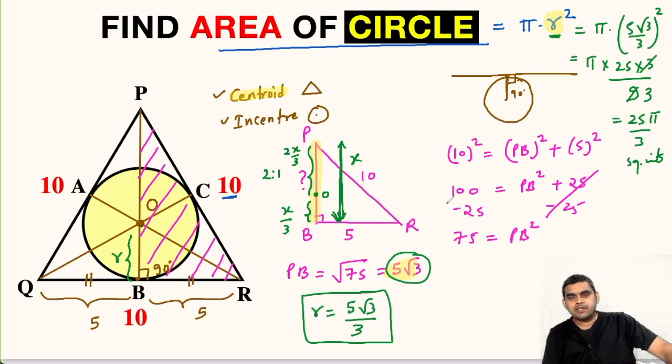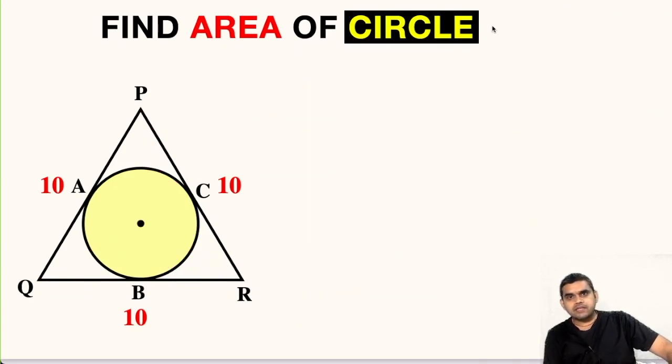Now we can use another method that is using trigonometry to find the area. So let us try method number 2. As we have seen area of circle is pi times radius squared. So in this method also our main aim will be to find the value of r.